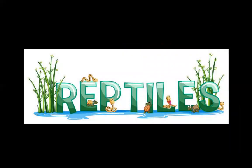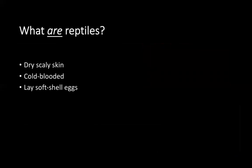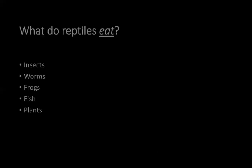The last type of animal we are learning about today are reptiles. Reptiles are animals that have dry and scaly skin, are cold-blooded, and they lay soft shell eggs. What do reptiles eat? Reptiles eat things like insects, worms, frogs, fish, and plants.